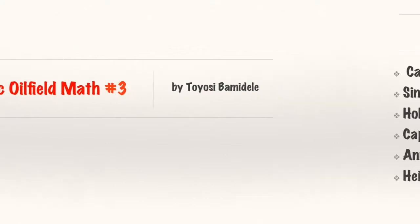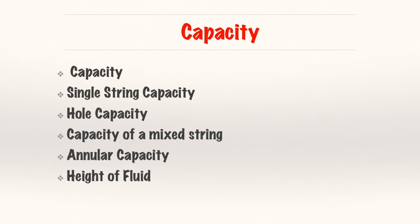So I'm going to start with the table of contents. We're going to discuss capacity, just basic capacity, explain what that is in detail, single string capacity, hole capacity, capacity of a mixed string, annular capacity, and how to determine the height of a fluid in a column or in a particular string you might have.